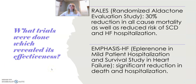So what trials were done which revealed its effectiveness? The first is the landmark RALES trial — the Randomized Aldactone Evaluation Study — done in 1999. It looked at the benefit of adding spironolactone to an ACE inhibitor, and showed a 30% reduction in all-cause mortality as well as reduced risk of sudden cardiac death and heart failure hospitalization. However, there was a 10% incidence of gynecomastia or breast pain.